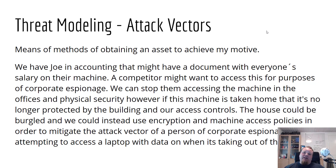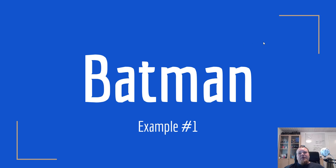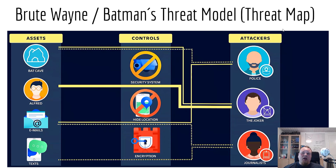Attack vectors could be many different things — basically methods of obtaining an asset to achieve a motive. The first example I'm going to give you is called Batman's Cave, something I found in a slideshow that I really liked. Think about it this way: Bruce Wayne is Batman. This is Batman's cave, and this is Batman's threat model — just the basic one, to keep it simple. To the left we have the Batcave, Alfred, emails, and texts.